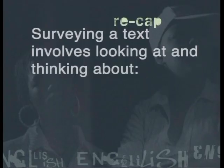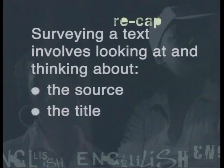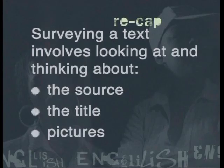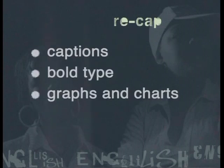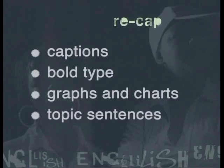Firstly, when surveying a text we must consider the source of the passage and look at the title or heading to get an idea of what the passage is likely to be about. We should also take note of any pictures or captions, information that is in bold type, and graphs and charts to get more clues about the passage. Then we learnt how to skim through the passage quickly, looking for the topic sentence or main idea in each paragraph.